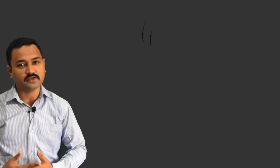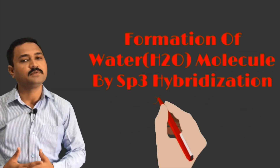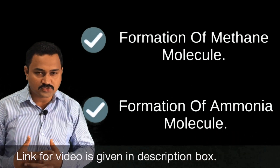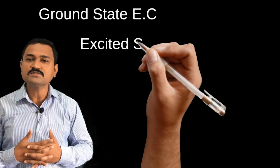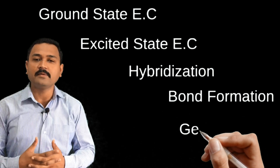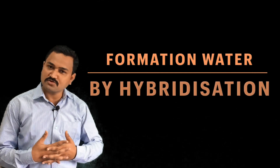Hello dear friends, welcome back to my YouTube channel Chemistry Aspirant. In today's lecture we are going to learn about the formation of water molecule by the sp3 hybridization process. We are going to involve the same steps as in the previous two videos: the first step is the ground state electronic configuration, second step is the excited state electronic configuration, third step is the hybridization process, fourth step is the bond formation, and the last step is the geometry and bond angle.